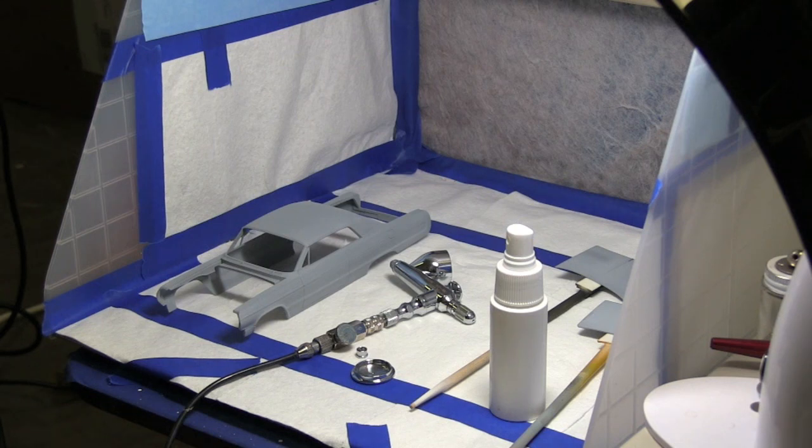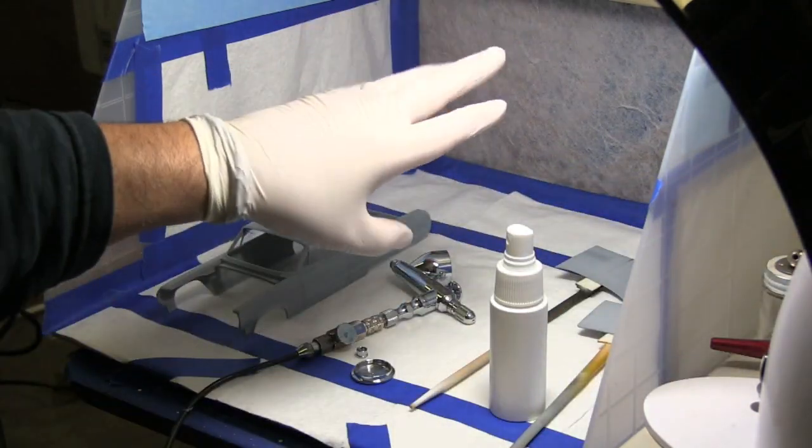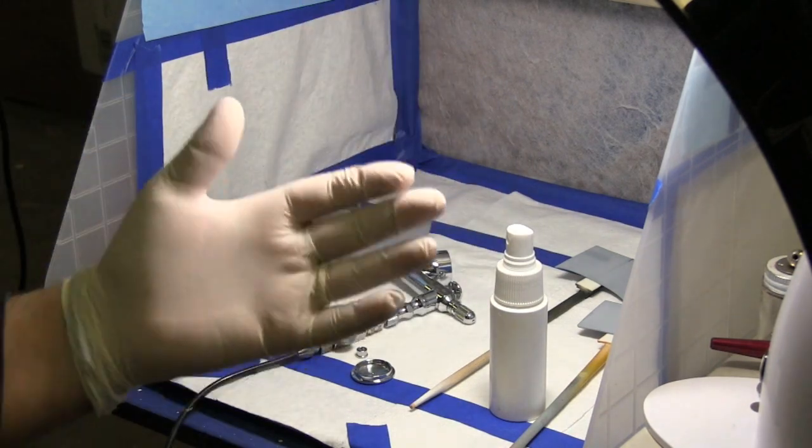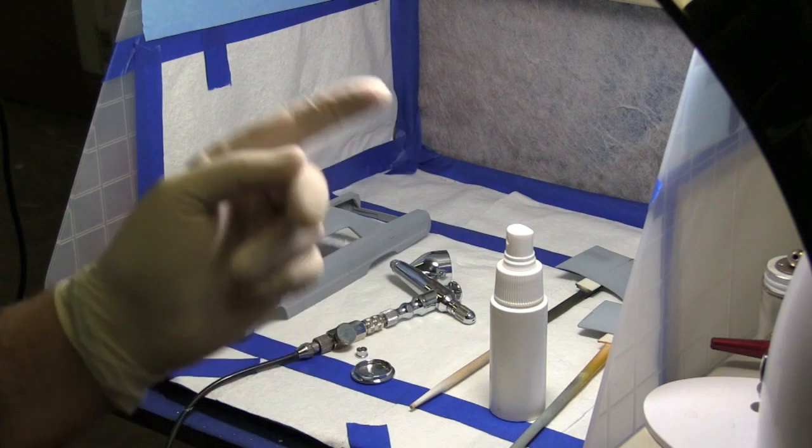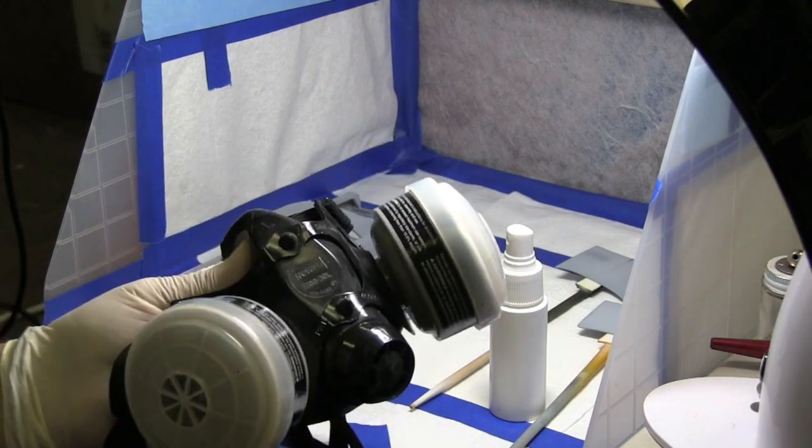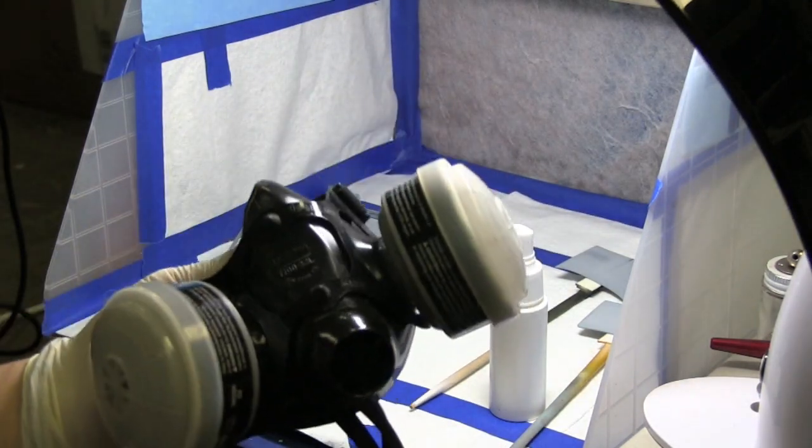We've got everything ready to go here. As always, with all of our videos on painting, we stress safety and making sure that you protect your health. We are going to be shooting urethane, House of Color urethane. You want to protect your hands with little latex gloves, long sleeves. You want to protect your skin, your eyes, and most importantly, you want to protect your lungs.